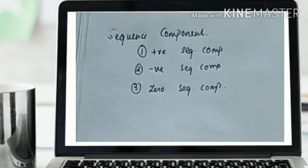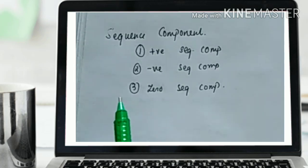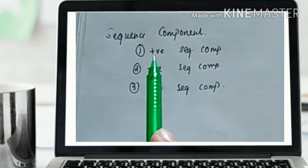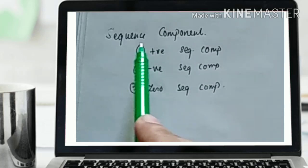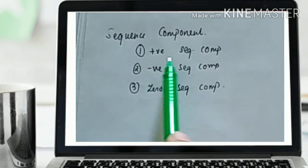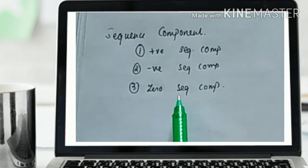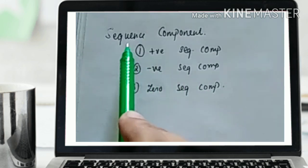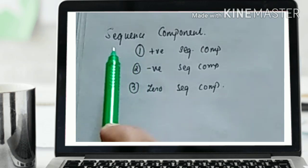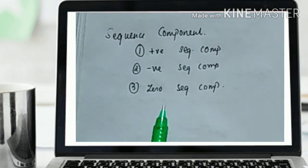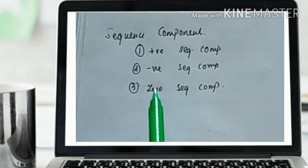Today we will see the sequence components of an unsymmetrical fault. To find out the fault, we have to calculate the sequence component, and this sequence component is of three types: the first is the positive sequence component, the second is the negative sequence component, and the third is the zero sequence component. In an unsymmetrical fault, these sequence components are introduced.